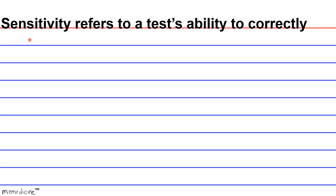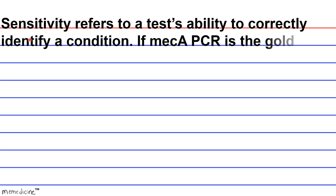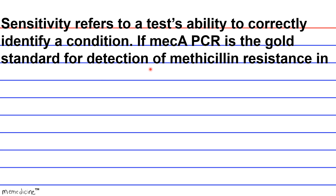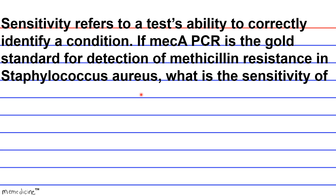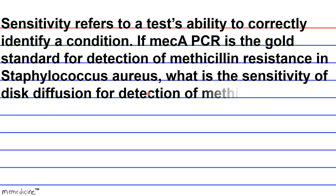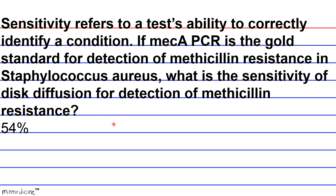Question 3: Sensitivity refers to a test's ability to correctly identify a condition. If mecA PCR is the gold standard for detection of methicillin resistance in Staphylococcus aureus, what is the sensitivity of disc diffusion for detection of methicillin resistance? Is it A. 54%, B. 90%, C. 60%, or D. 30%?